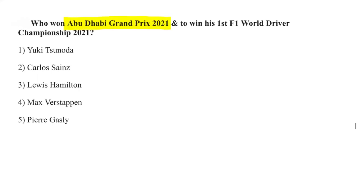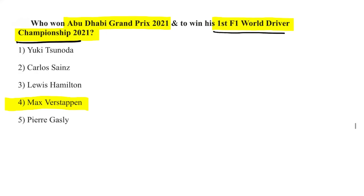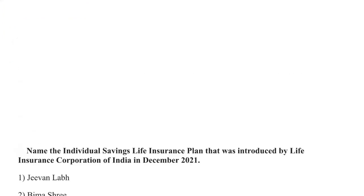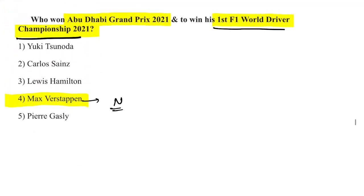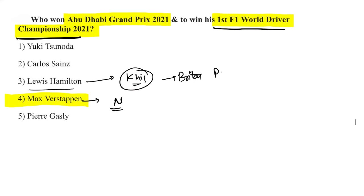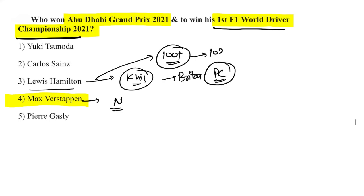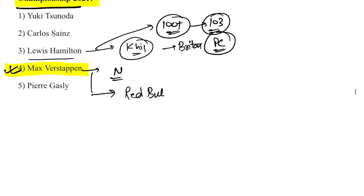Max Verstappen won the Abu Dhabi Grand Prix 2021 to claim his first F1 World Drivers' Championship. He is from the Netherlands and drives for Red Bull. Lewis Hamilton, who drives for Mercedes, was honored with a knighthood in Britain by Prince Charles and has over 103 F1 victories.